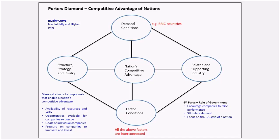There is a sixth force referred to in Porter's Diamond as the role of the government. Governments in different countries can encourage companies to raise performance, stimulate demand, and focus on the RC grid of a nation. RC grid stands for resource competency grid, which provides a country its strategic capability.